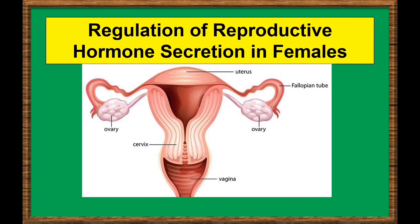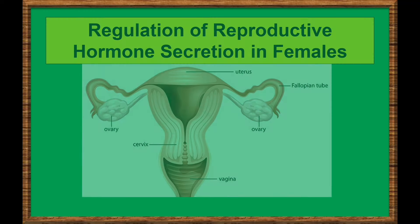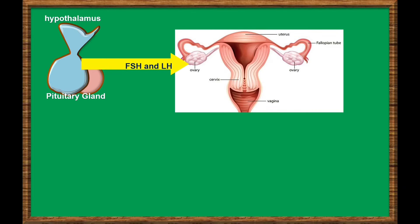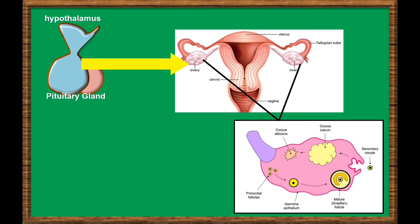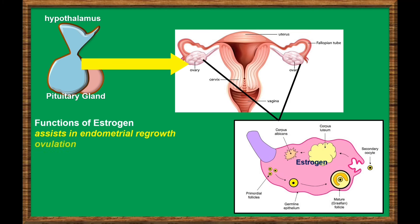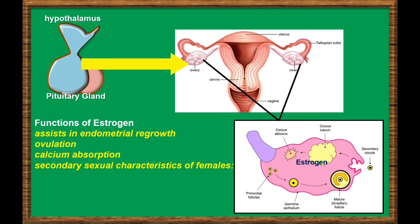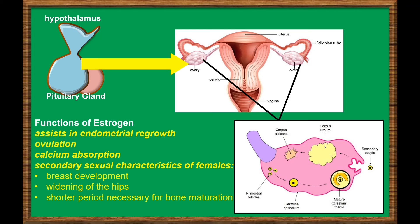Regulation of Reproductive Hormone Secretion in Females. The female reproductive system is also regulated by hormones. GnRH from the hypothalamus stimulates the pituitary gland to release FSH and LH into the ovaries. The luteinizing hormone and follicle-stimulating hormone stimulate the ovaries to produce estrogen and progesterone. Estrogen is the reproductive hormone in females that assists in endometrial regrowth, ovulation, and calcium absorption. It is also responsible for secondary sexual characteristics of females, including breast development, flaring of the hips, and a shorter period necessary for bone maturation.